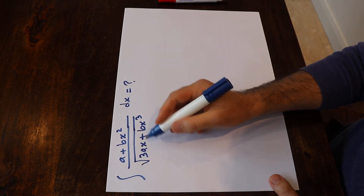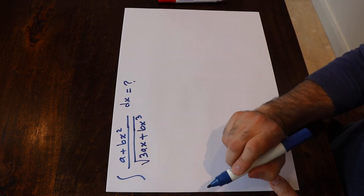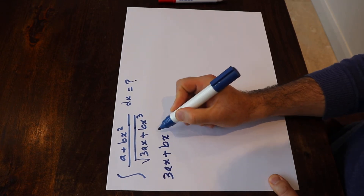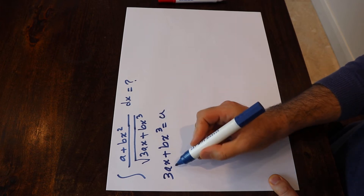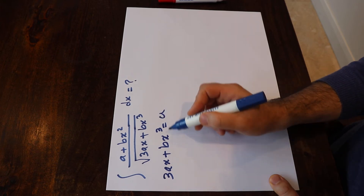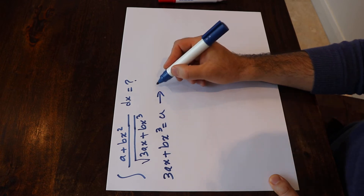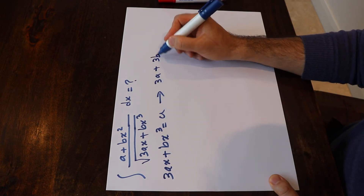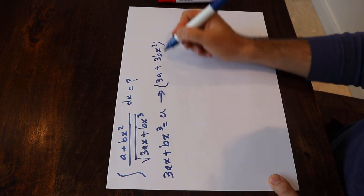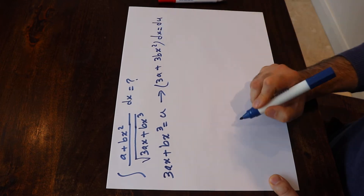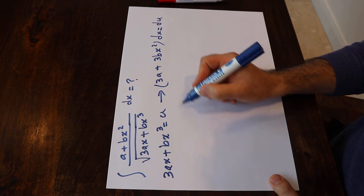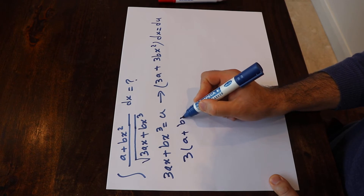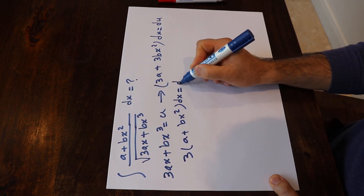To solve this integral, you need to use the substitution rule. So if you write 3ax + bx³ equal to u, and if you take the derivative of each side of this equation, you will get 3a + 3bx² dx is equal to du. Or you can write it as 3 times (a + bx²) dx will be equal to du.